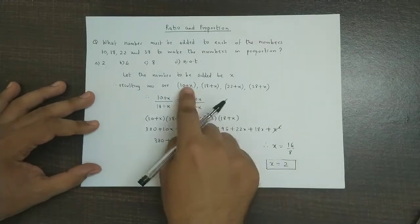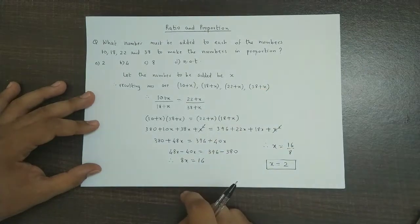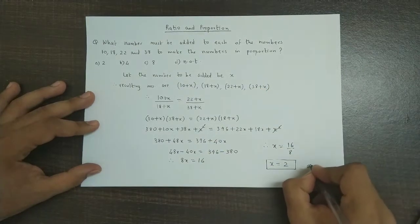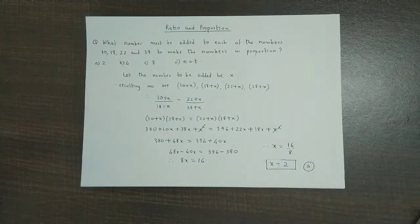So we need to add 2 to each of these numbers to make them in proportion. So the answer to this question is option A.